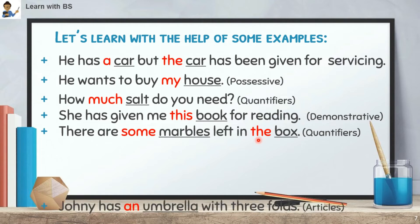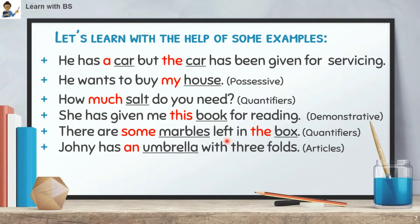Example 6: 'Johnny has an umbrella with three folds.' First, identify the noun — 'umbrella'. The word that comes before it is 'an'. So 'an' is a determiner. What type? It is an Article.